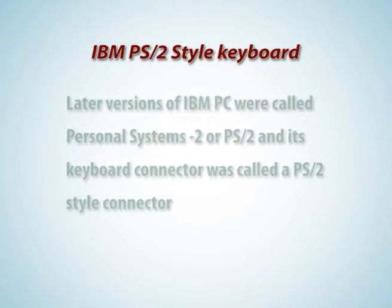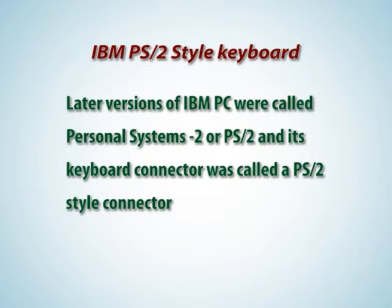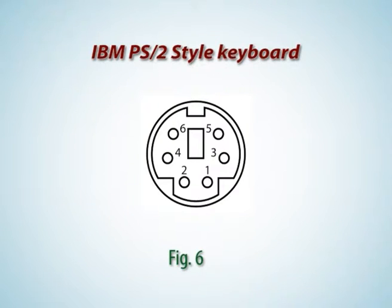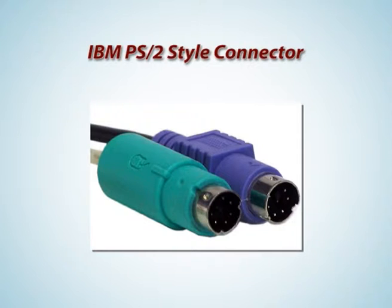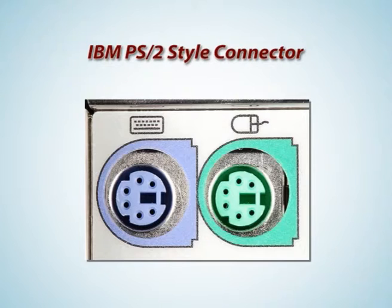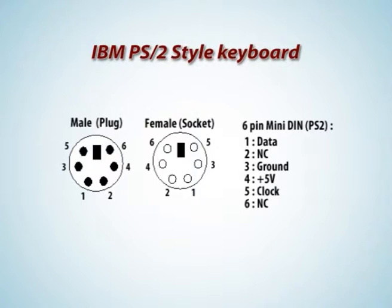IBM PS2 style keyboard: Later versions of IBM PC were called Personal Systems 2 or PS2, and its keyboard connector was called the PS2 style connector. It used 6 pins as shown in figure 6. The PS2 connector for keyboard and mouse interfaces were electrically similar and employed the same communication protocol. However, they were not interchangeable since the two devices used a different set of commands. This connector has clock and data signals and 5-volt power connections, and is also used for mouse interface.